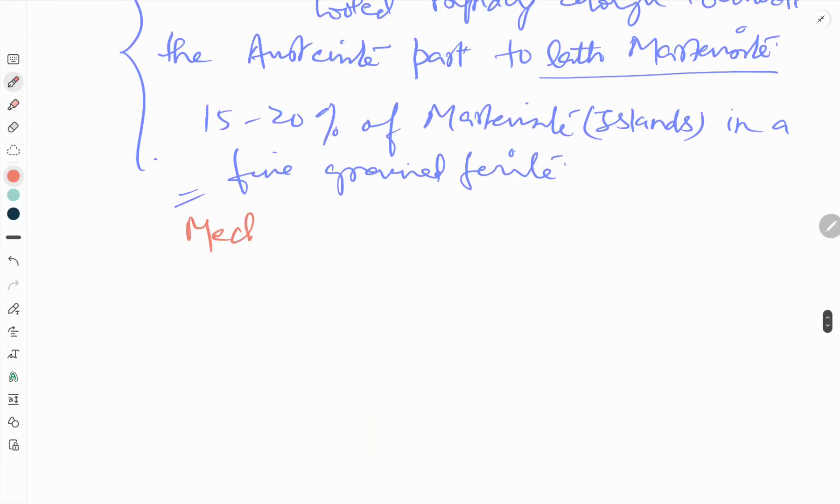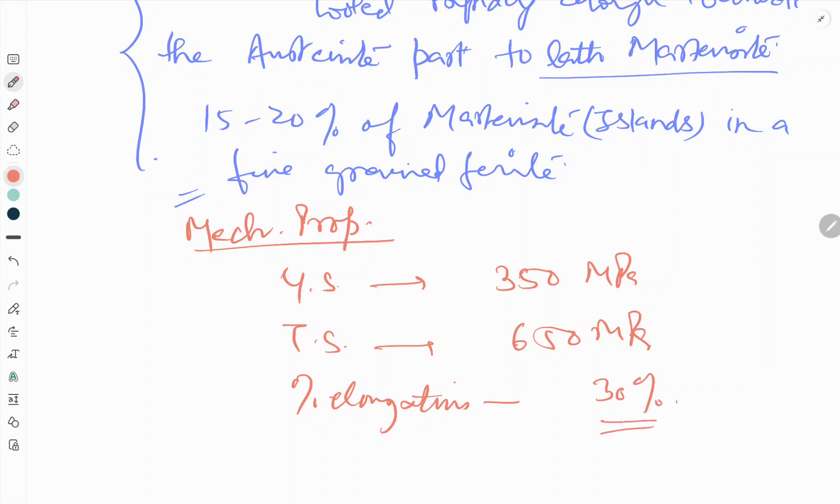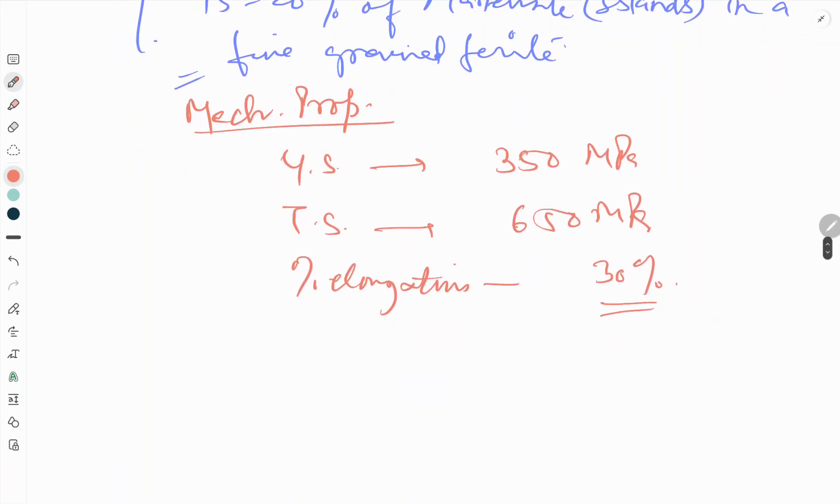The mechanical properties of dual phase steel are: yield strength 350 MPa, tensile strength 650 MPa, and elongation around 30%, which is almost the same. The formability is only slightly inferior to conventional low carbon steel.